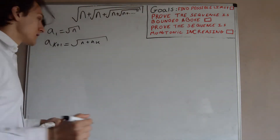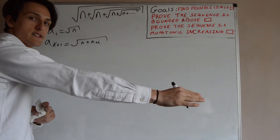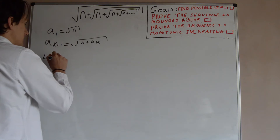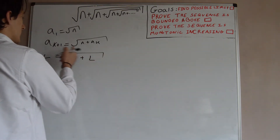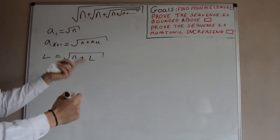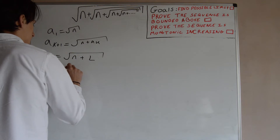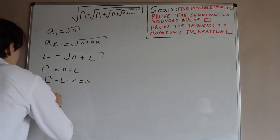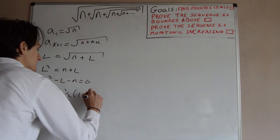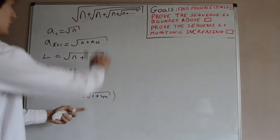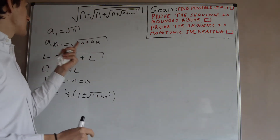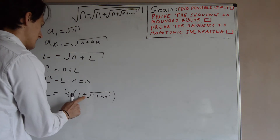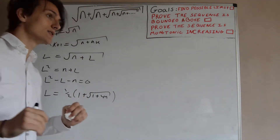Our first goal: let's find the possible limit. That limit will emerge when k goes to infinity — when we get very far into the sequence. So when k → ∞, aₖ → L and aₖ₊₁ → L as well. That gives us the nice equation l² = n + l. Rearranging: l² − l − n = 0. Putting that into the quadratic formula gives l = ½(1 ± √(1 + 4n)). However, since we take something positive and always add n then take a positive square root, our possible limit must be positive, so we discard the negative solution. Our possible limit is l = ½(1 + √(1 + 4n)).